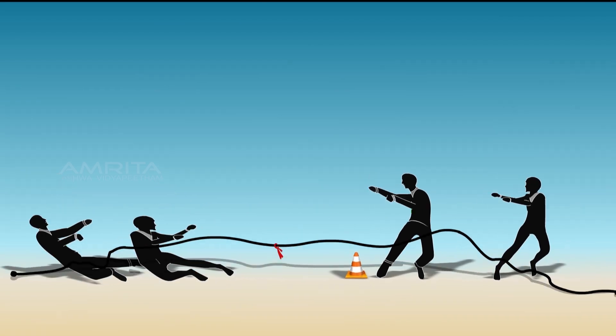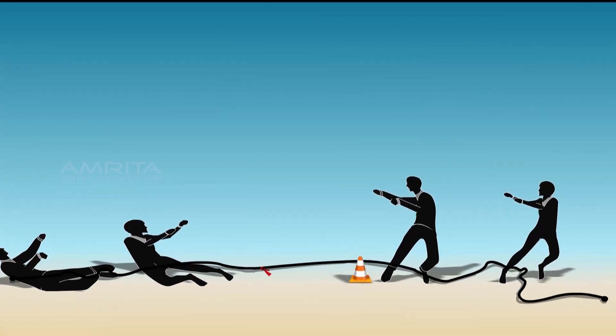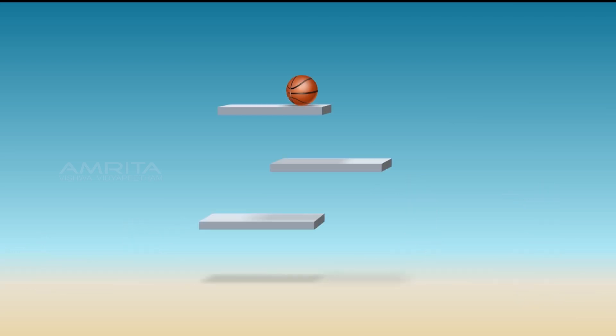If one of the teams lets go of the rope, the opposite team falls backwards. This tendency to fall backwards despite letting go of the rope is due to inertia. That is, if an object is at rest, it tends to remain at rest, and if it is in motion, it tends to stay in motion. This property of an object is called its inertia.